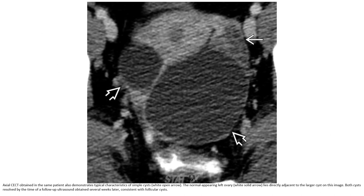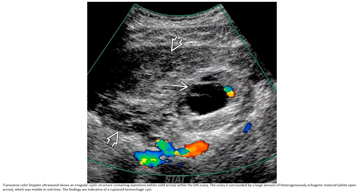CT obtained in the same patient also demonstrates typical characteristics of simple cysts. The normal right ovary lies directly adjacent to the right cyst on this image. Both cysts resolved by the time of follow-up ultrasound obtained several weeks later, consistent with follicular cysts.